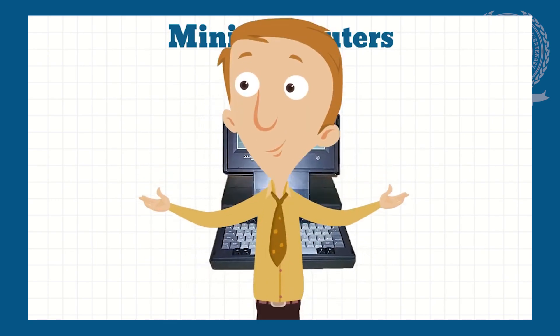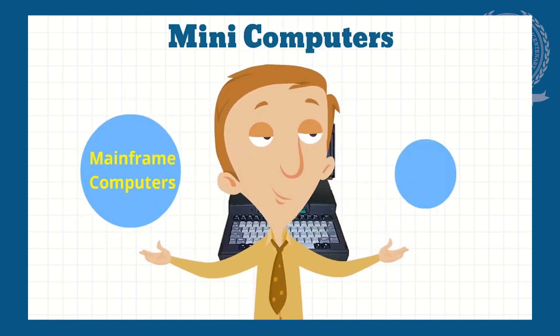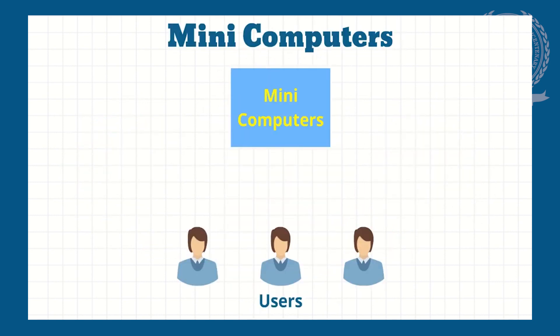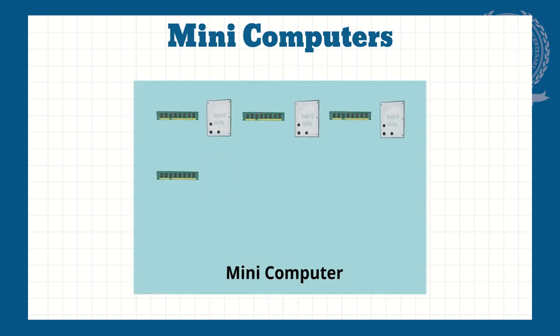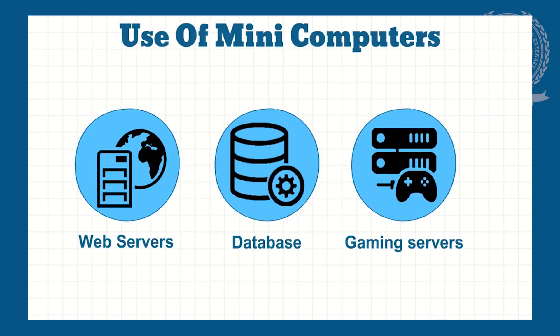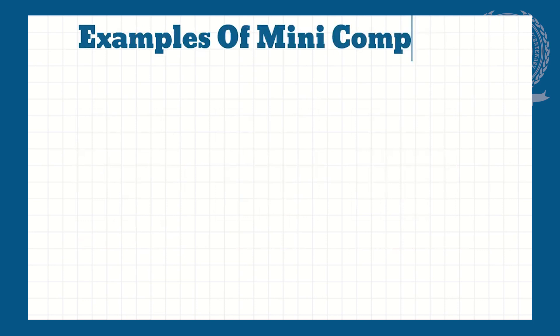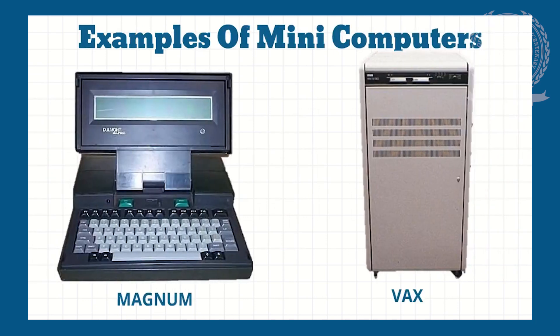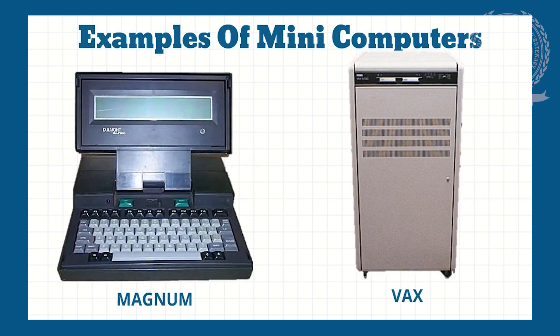Minicomputers lie somewhere between mainframe and microcomputers. They are typically multi-storage systems with more memory and larger storage capacity than microcomputers. They are used as web servers, database servers, and gaming servers. Examples include Magnum, Wex, etc.